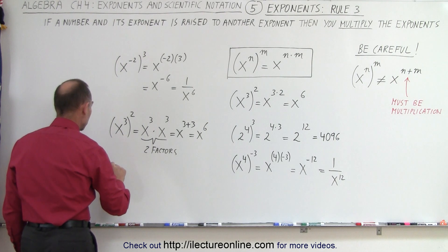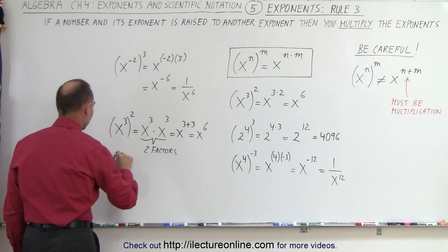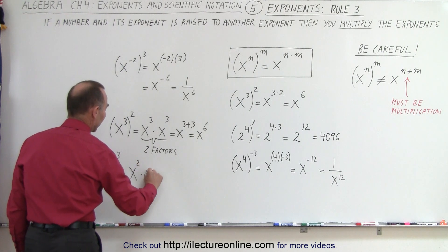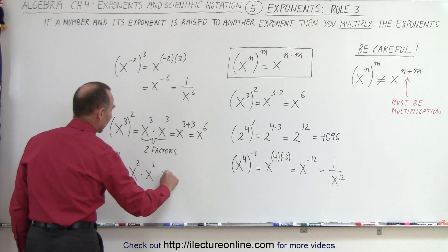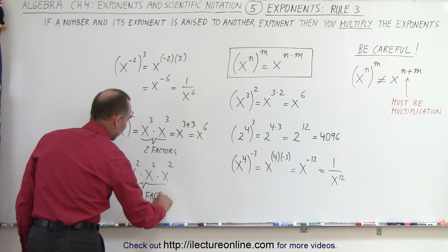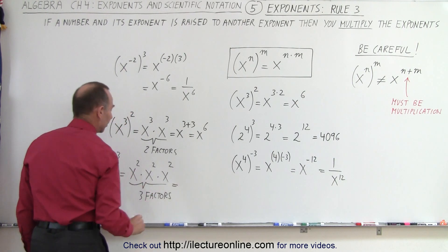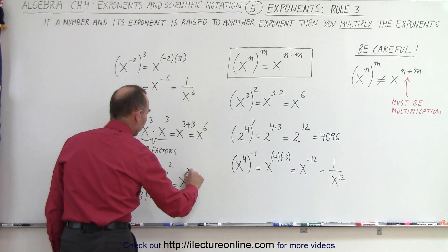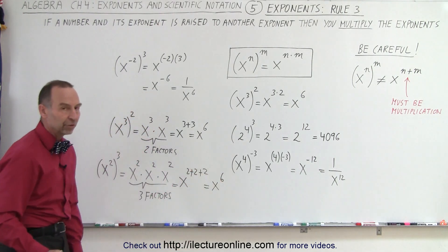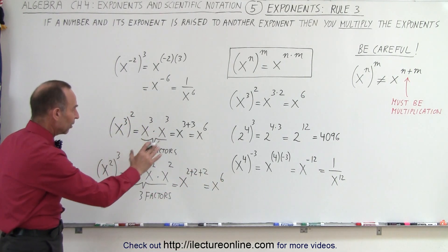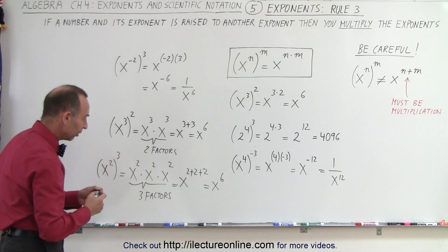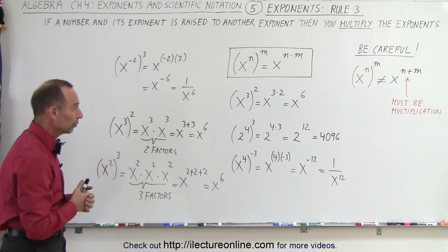For example, if we have x to the second power, and the whole thing is raised to the third power, this is equal to x to the second power times x to the second power times x to the second power — three factors. And then we can say that this is equal to x to the 2 plus 2 plus 2, or x to the 6th power. Again, you get the same result. You can look at these things in various ways, solve them in different ways, and always you'll get the same result if you adhere to the correct rules.